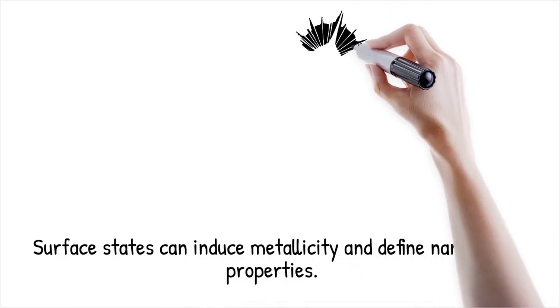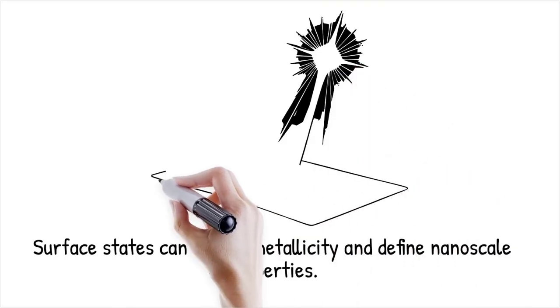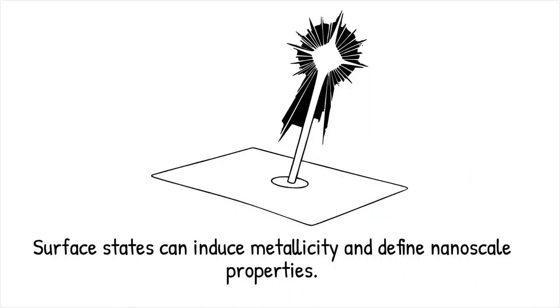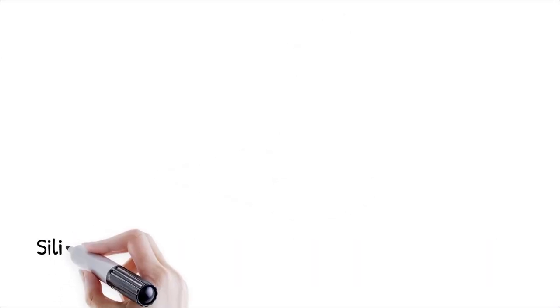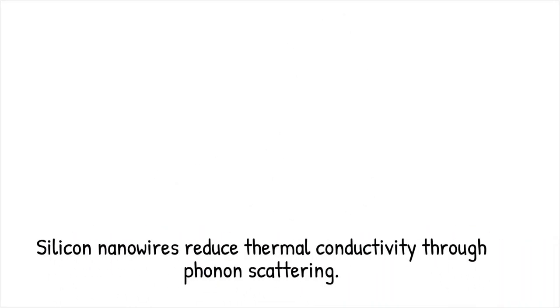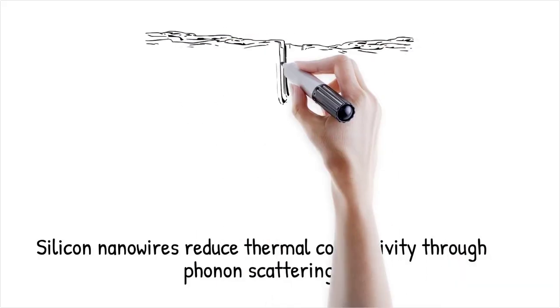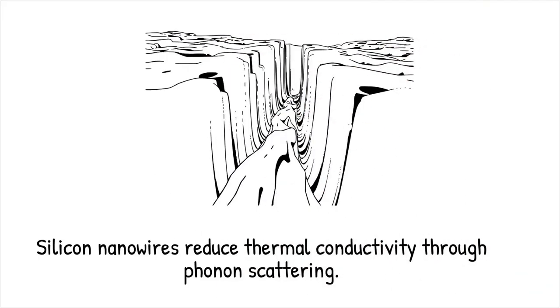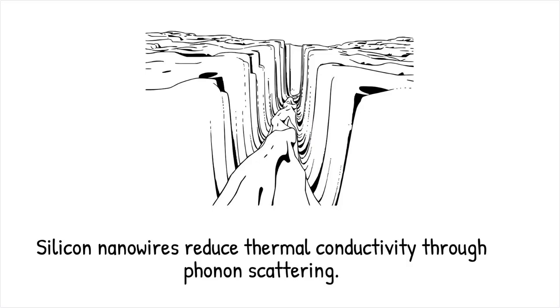Thus, surface electronic and vibrational modes become crucial determinants of nanoscale properties. Silicon nanowires show drastically reduced thermal conductivity due to enhanced phonon boundary scattering. It's like shouting into a narrow canyon—sound echoes differently because the walls disrupt wave propagation.